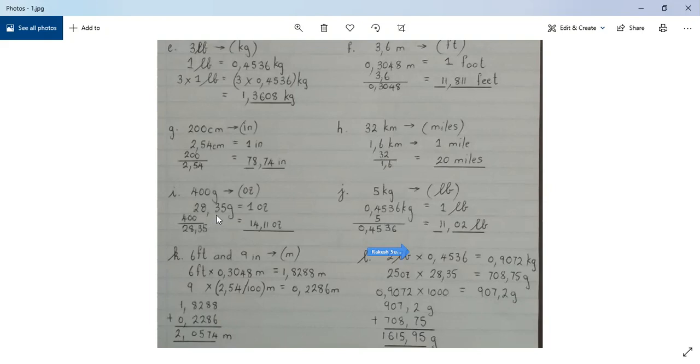By doing that, we then determine kilometers converted to miles. So 32 kilometers divided by 1.6 kilometers equals 20 miles. Similarly, for question 4i, where you were required to convert grams to ounces. From the information given, 28.35 grams equals 1 ounce. You divide 400 divided by 28.35, which equals 14.11 ounces.